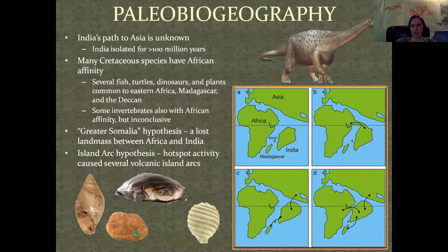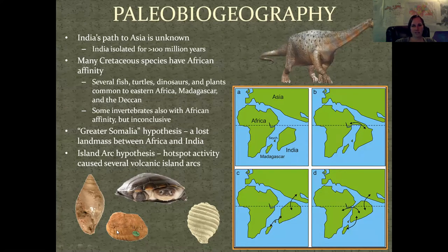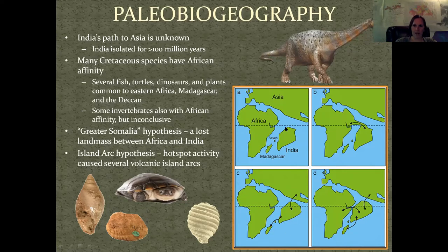The two areas I wanted to look at in my study were paleobiogeography — India was on its own for so long, so this is something a lot of people explore — and specifically the mollusks. I didn't get very far with that because it's a thesis, it's the beginning of work. But interestingly, most of the species in India have an African affinity. There are different hypotheses: some think India just went close to Africa, some think there was a land bridge, some think animals were hopping on island arcs. There's not a lot of mollusk species from Eastern Africa to work with, though.